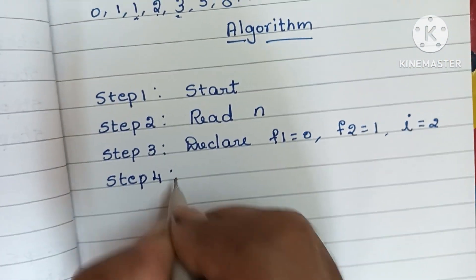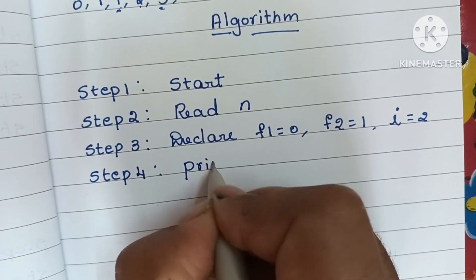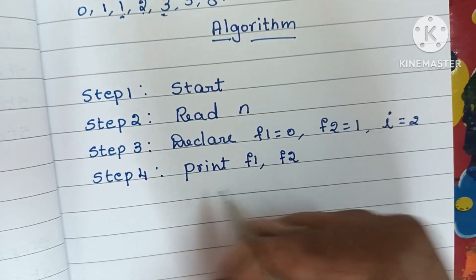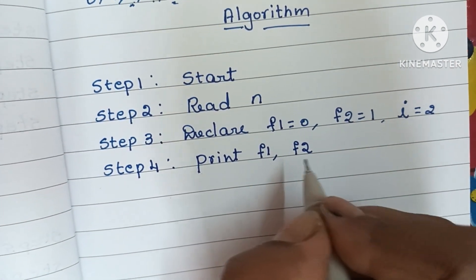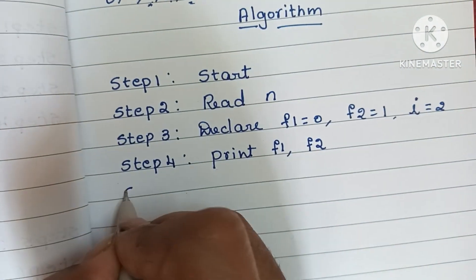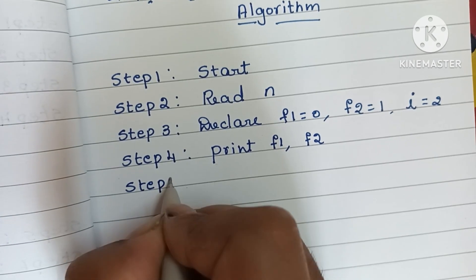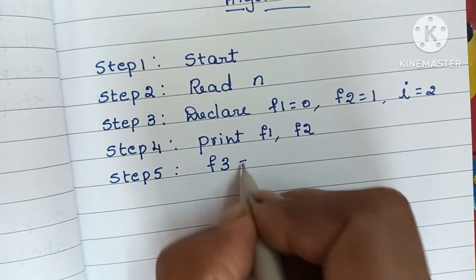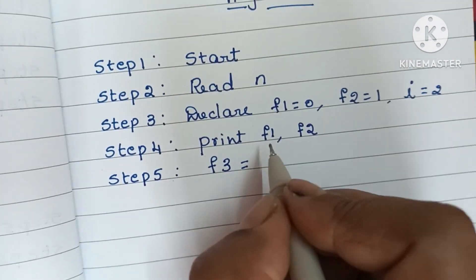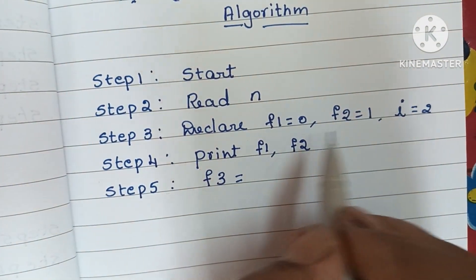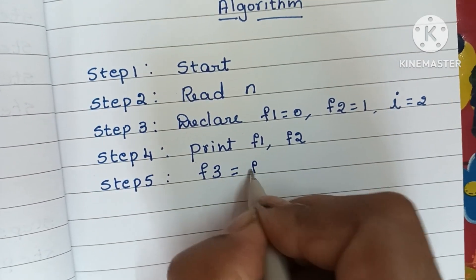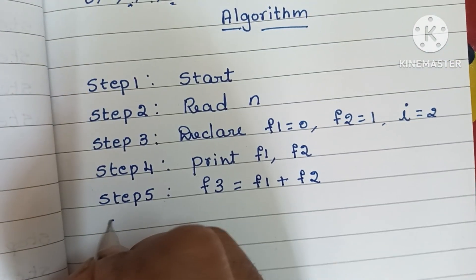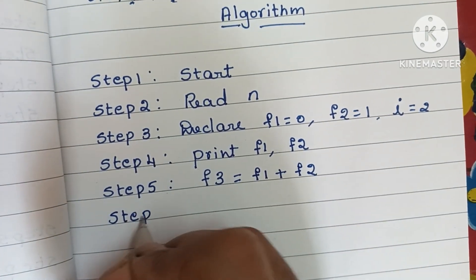Step four: we print the values of F1 and F2. Step five: we find the value of F3 by adding the previous two numbers F1 and F2, so F3 equals F1 plus F2.